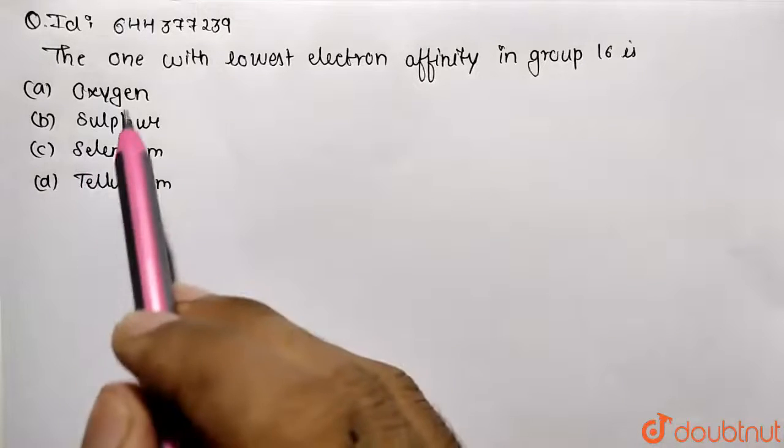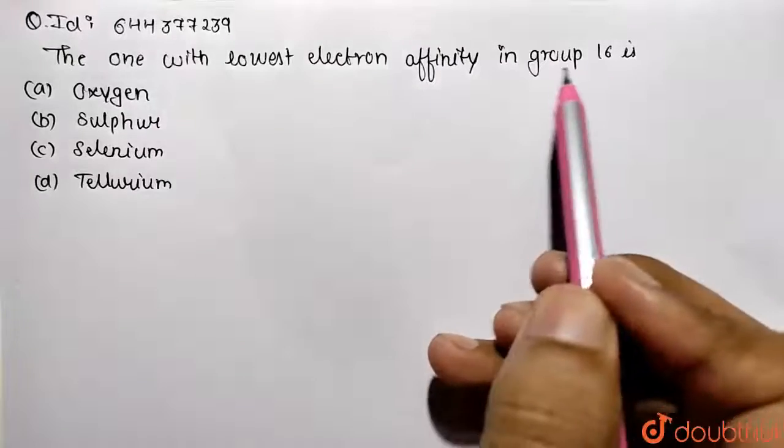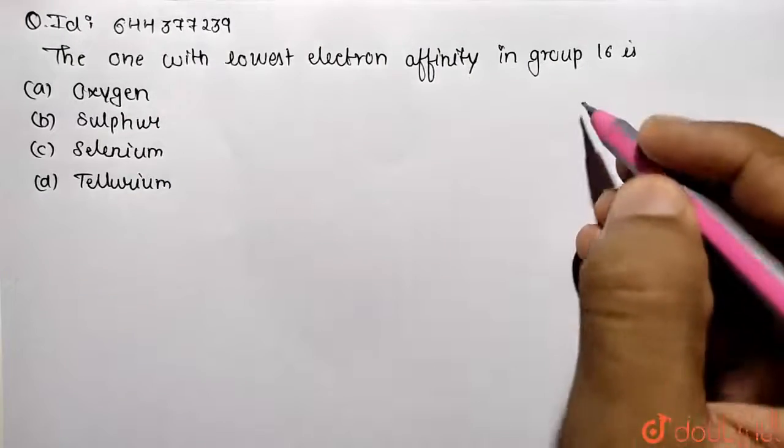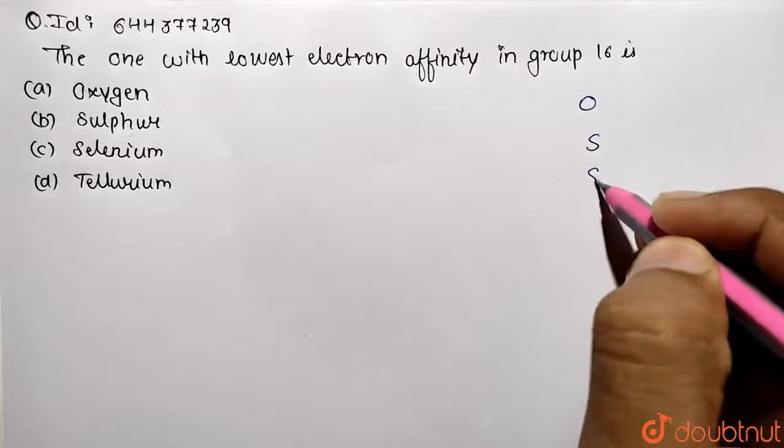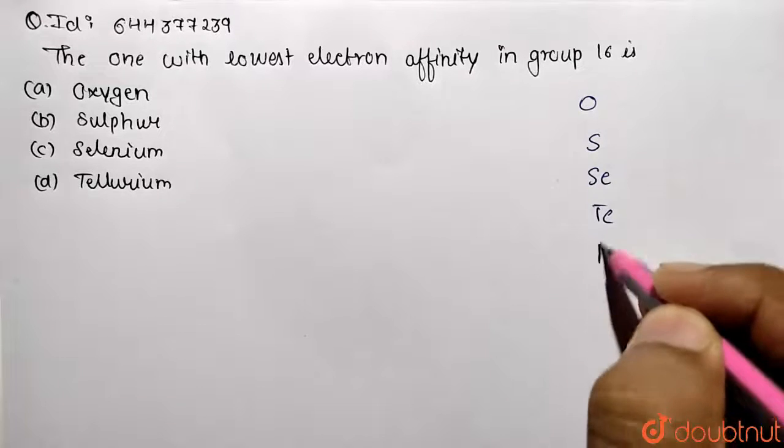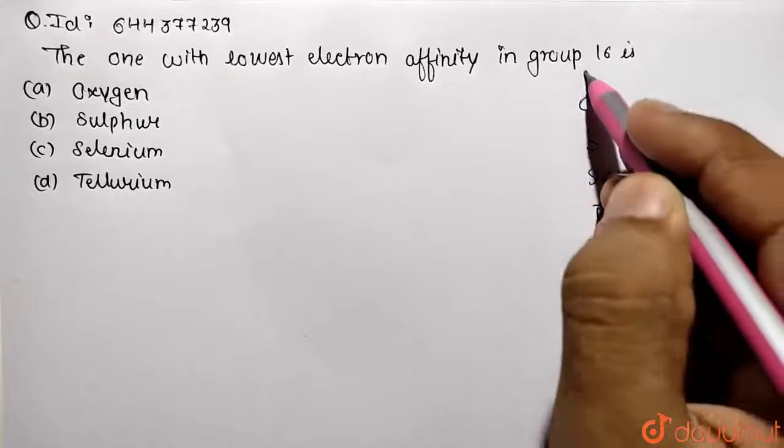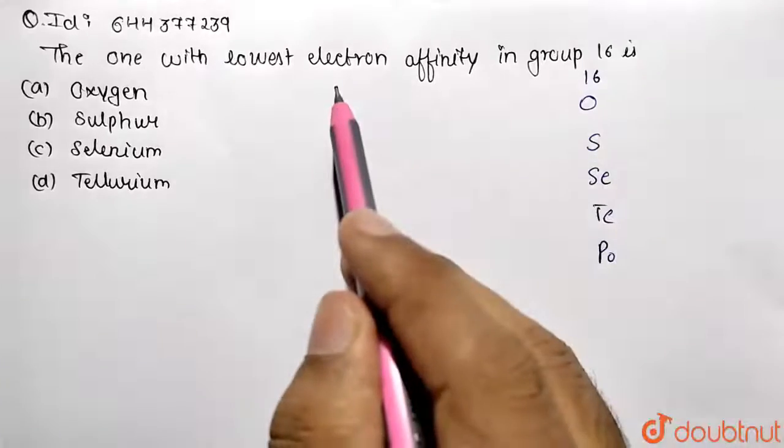We need to identify the one with the lowest electron affinity in Group 16. So basically, Group 16 consists of oxygen, sulfur, selenium, tellurium, and polonium. These are the basic group elements of Group 16. Now, what is this electron affinity?